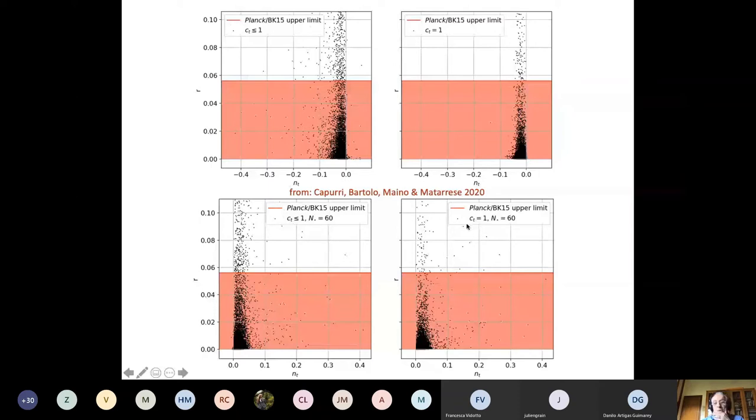In the second case, what we do is enforce that CT is equal to one. You see that in going from CT less than one to CT equal to one, the points are more clustered around NT equal to zero. That is due to many reasons. One is that we also look for the attractors of the system, and most of the attractors are really concentrated around NT equal to zero.